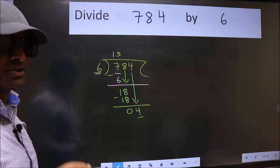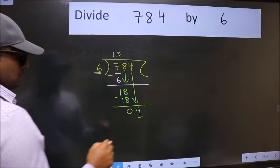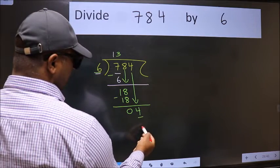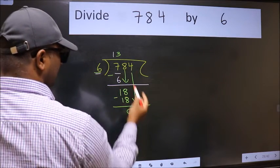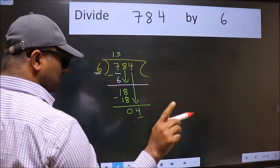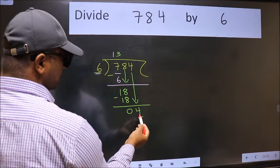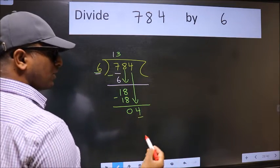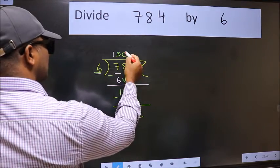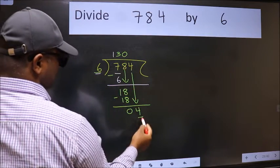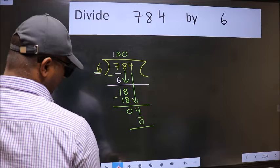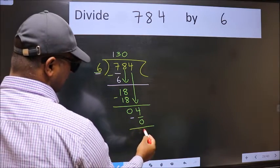Instead of that, what you should think of doing is, which number should we take here. If I take 1, we will get 6. But 6 is larger than 4. So what we do is, we take 0. So 6 into 0, 0. Now we subtract. We get 4.